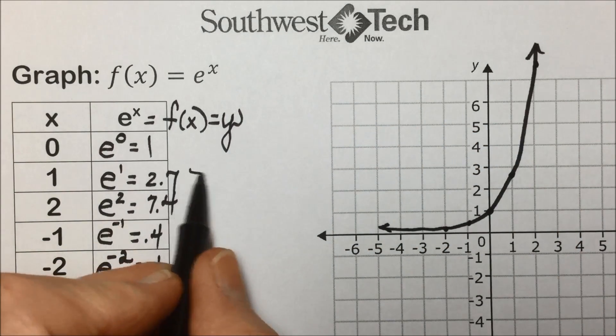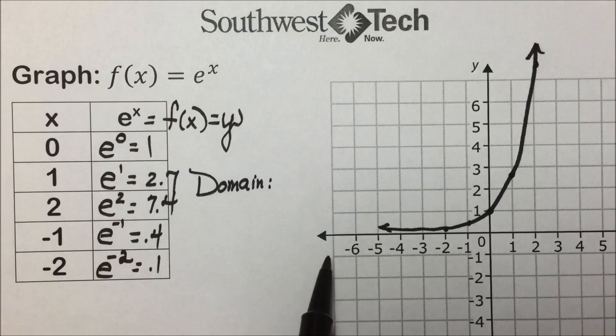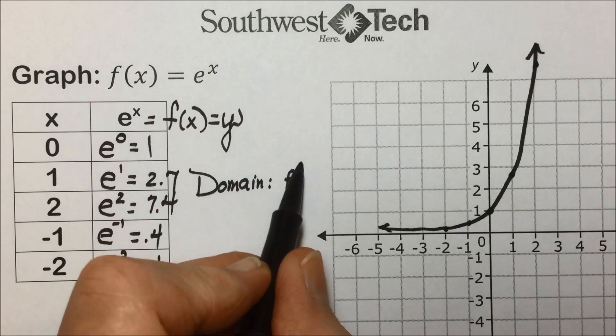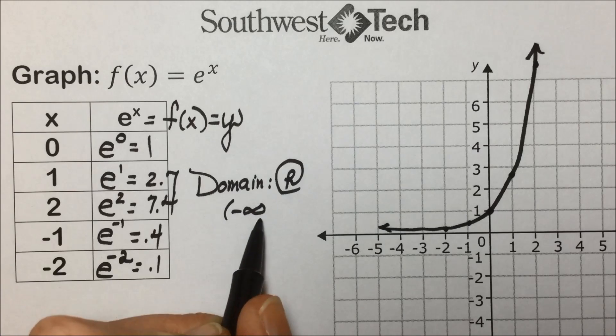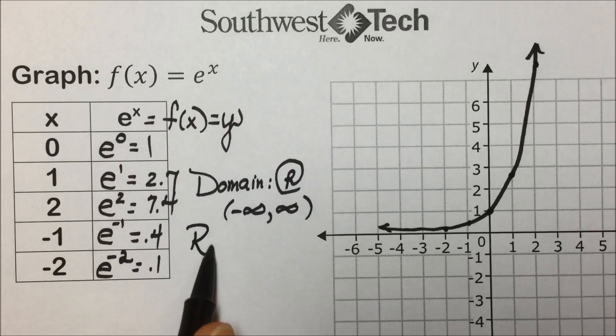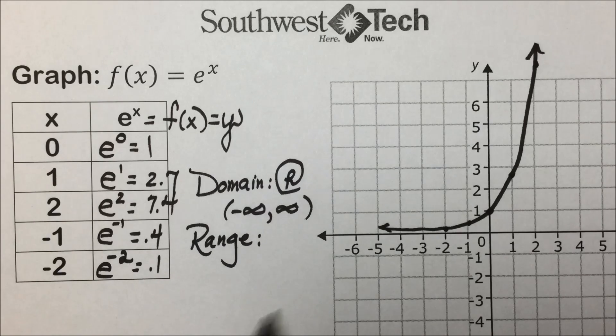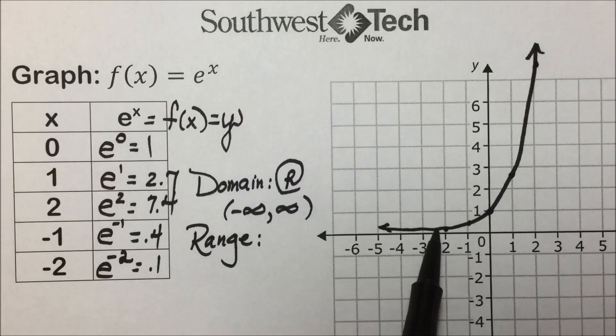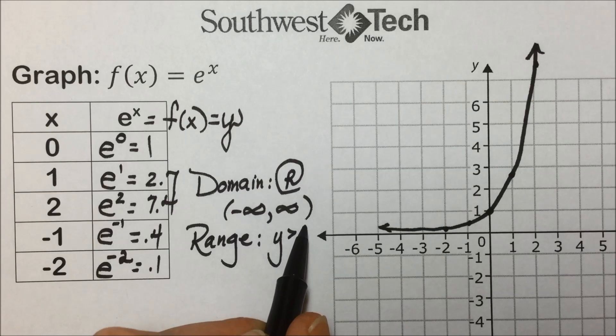As far as the domain, there would be no restriction on the domain, all real numbers can be used. If we put that in interval notation, it would run the gamut from negative infinity to positive infinity. For the range, or the y values that are being used, it's all values that are positive, in other words greater than 0.